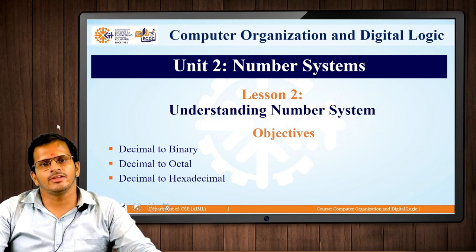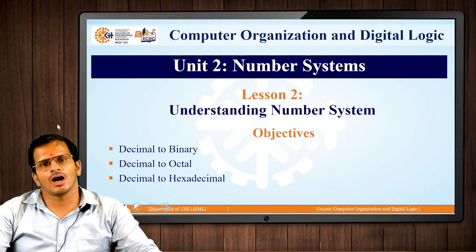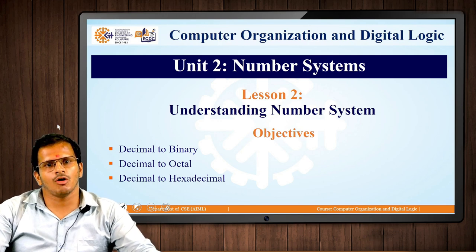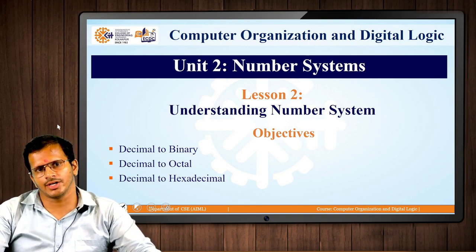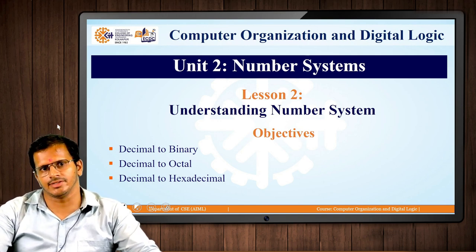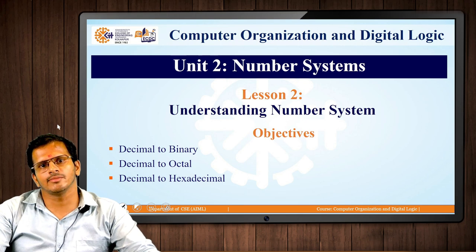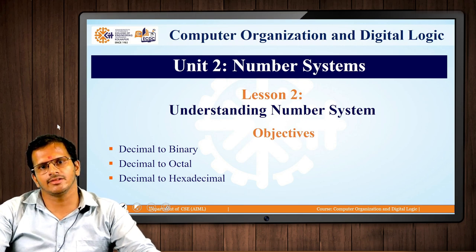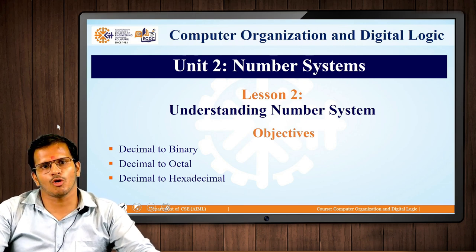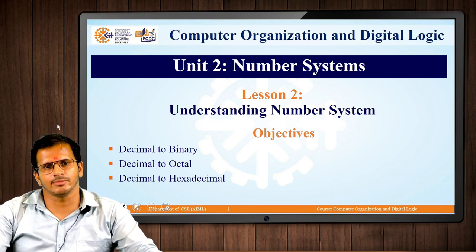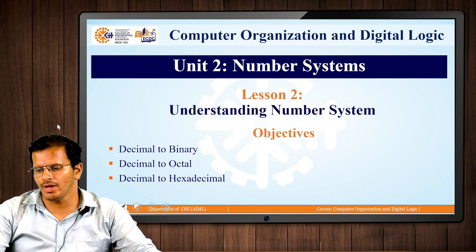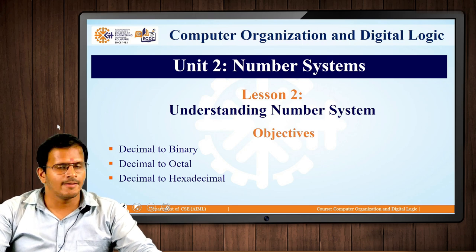Previously we had understood how binary, octal, and hexadecimal numbers are converted into the decimal number system. Here individually we will be looking at how the decimal number is converted to binary, then decimal to octal, and then decimal to hexadecimal.